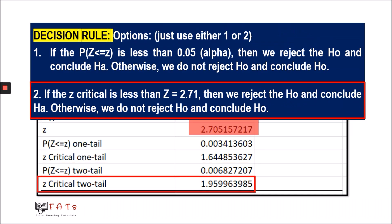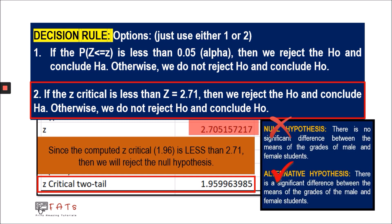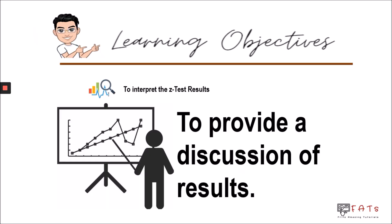The second option is to compare the z-critical to the corresponding value of 0.05 in the z-distribution, which in this case is 1.96. If the computed z value happens to be less than the z-critical of 1.96, then we will reject the null hypothesis and conclude the alternative hypothesis; otherwise, we do not reject the null hypothesis. In this example, the computed z value is 2.71, which is greater than 1.96, so we reject the null hypothesis and conclude the alternative hypothesis.